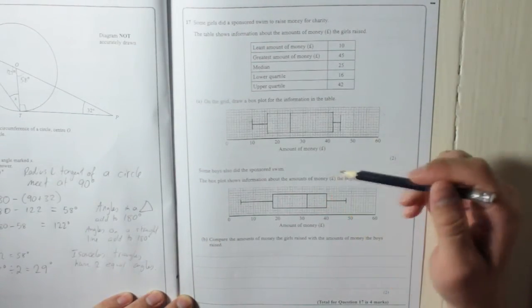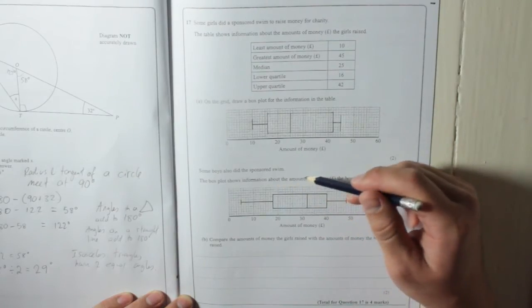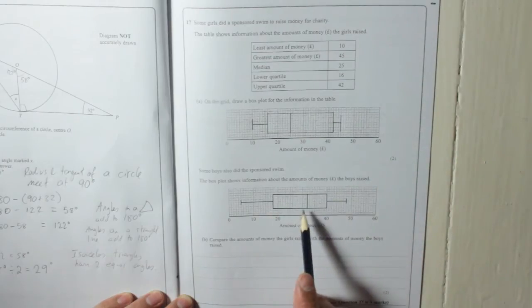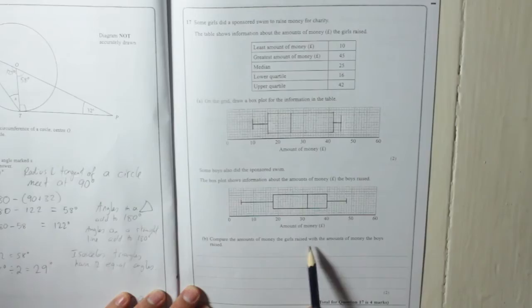Some boys also did the sponsored swim. The box plot shows information about the amounts of money in pounds the boys raised. So, there you go. Compare the amounts of money the girls raised with the amounts of money the boys raised.